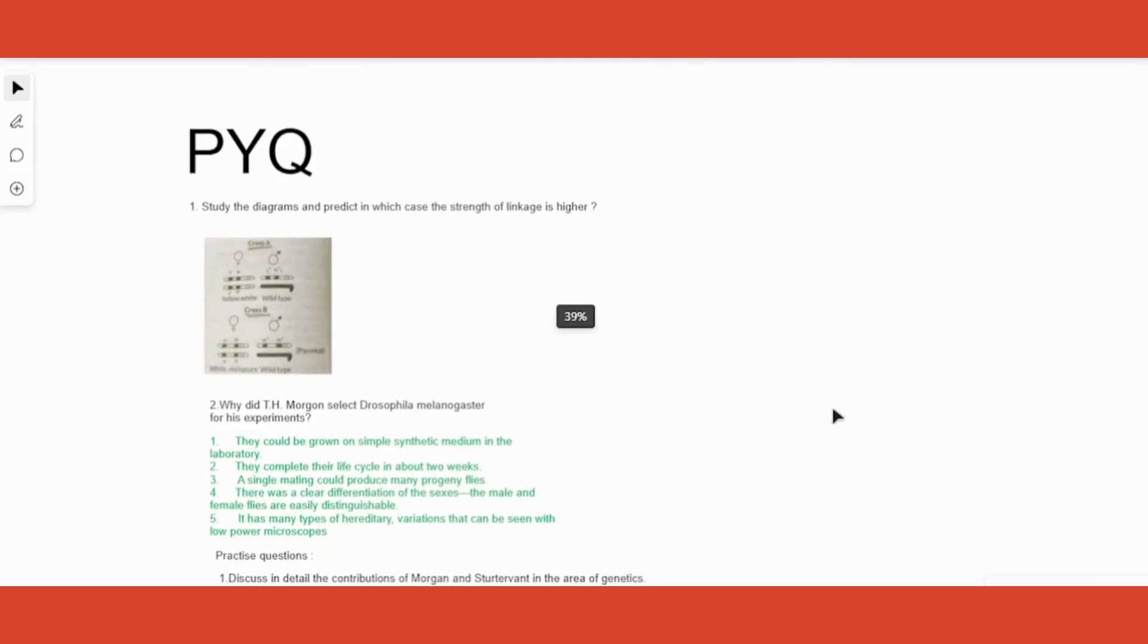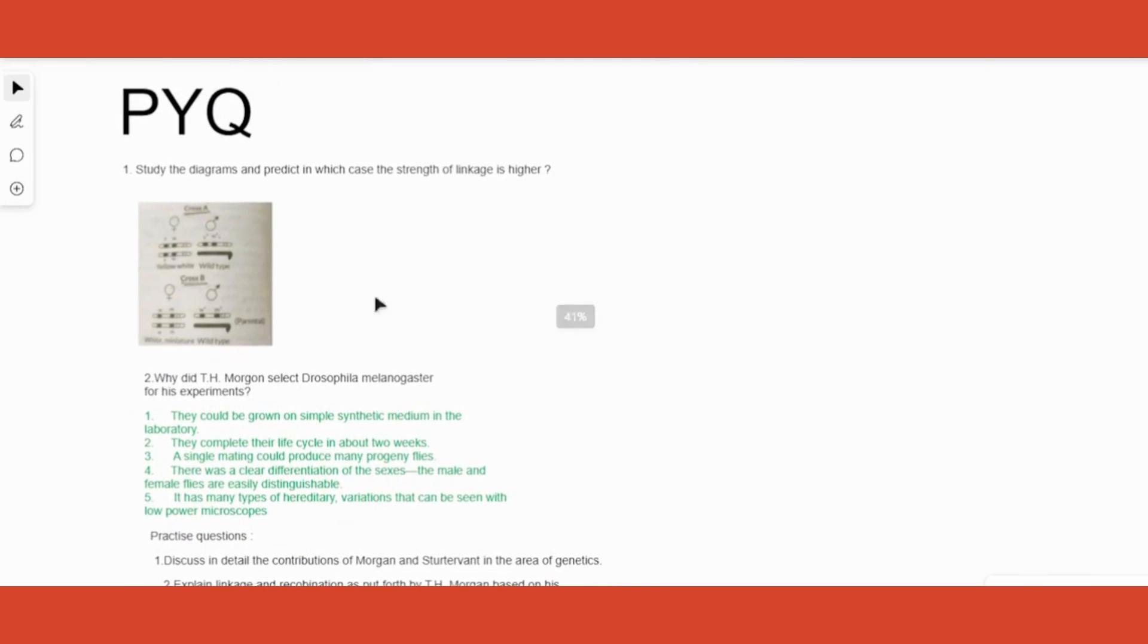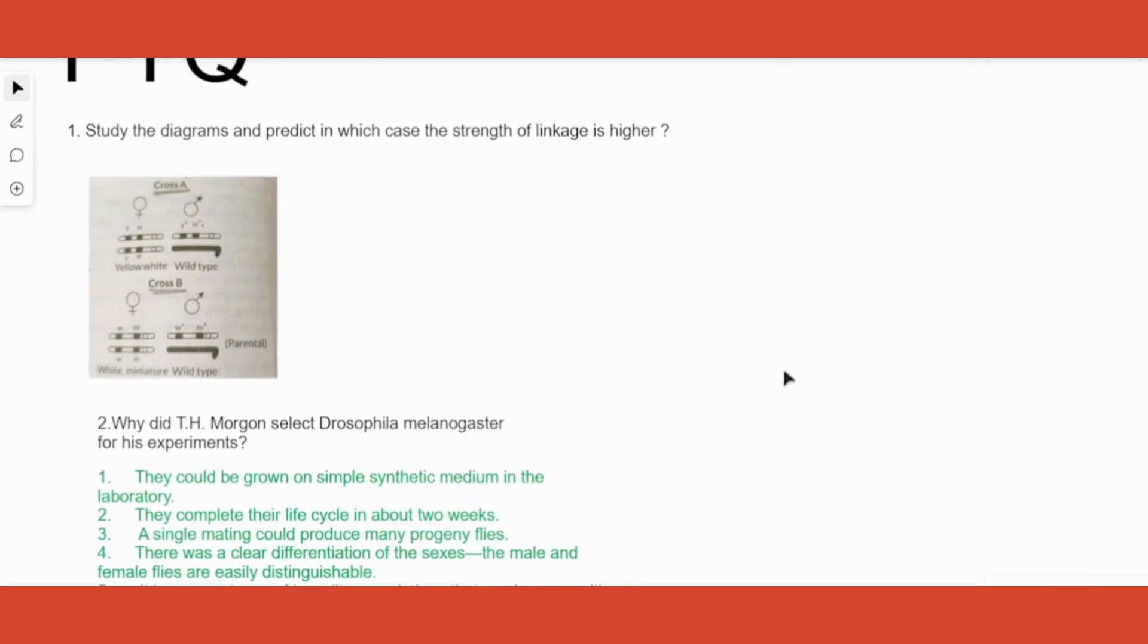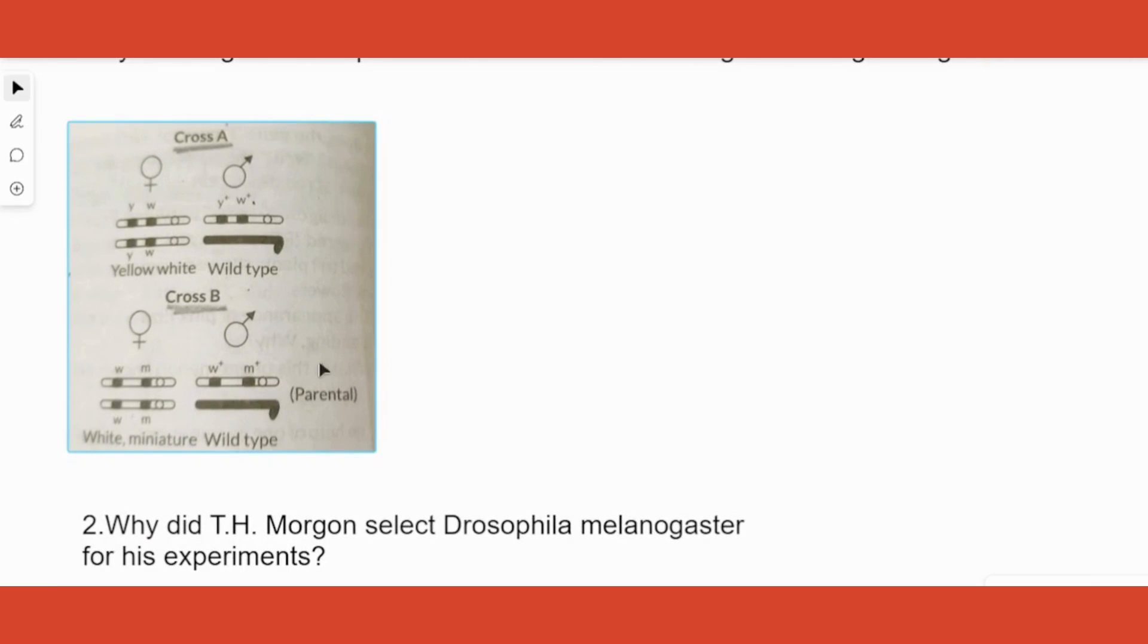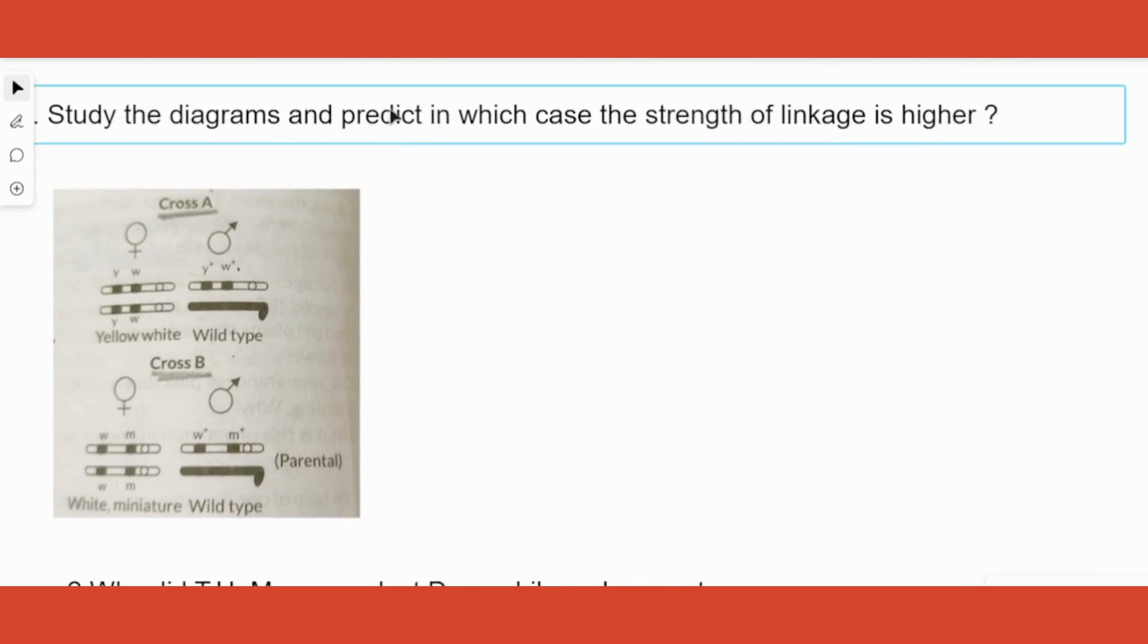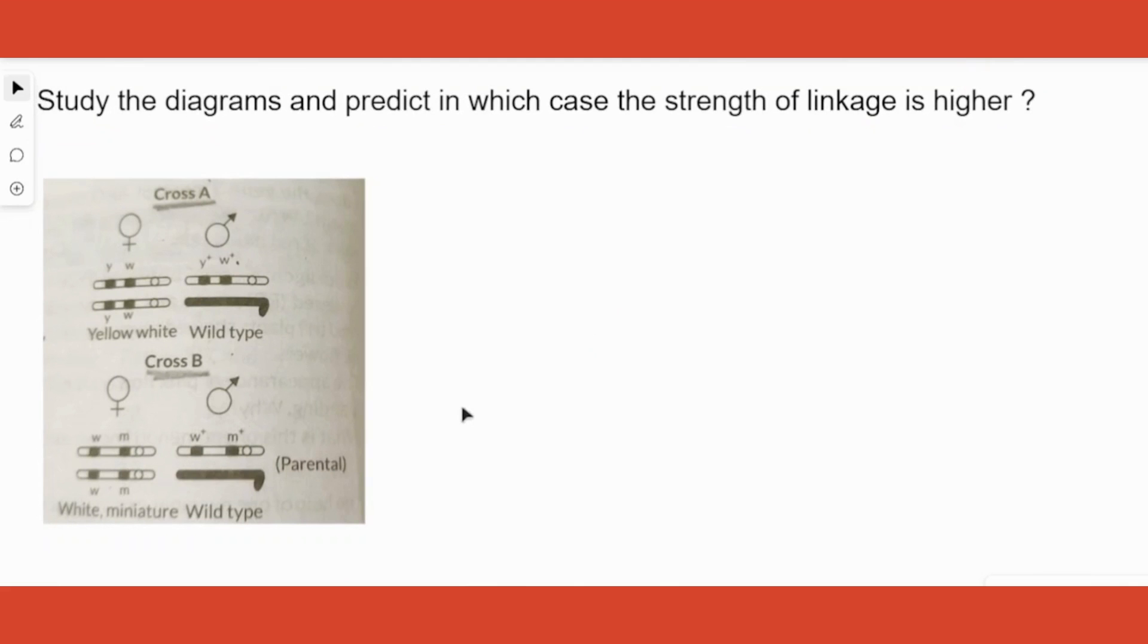Let's look at some practice questions - this is a usual question that you get. You will be given two crosses like this and asked: study the diagram and predict in which case the strength of linkage is higher. Which one will it be higher? Wherever the genes are near to each other. Where are the genes near to each other? In Cross A. So your answer is Cross A has more strength of linkage because of the proximity or nearness of the genes.